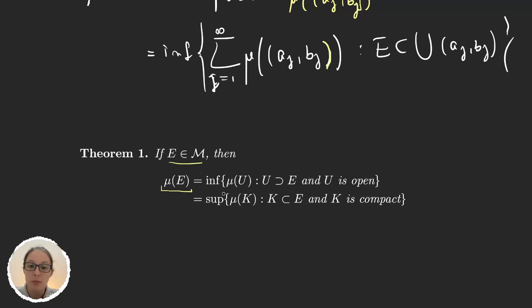So if a function satisfies these two things, then we say that mu is regular.